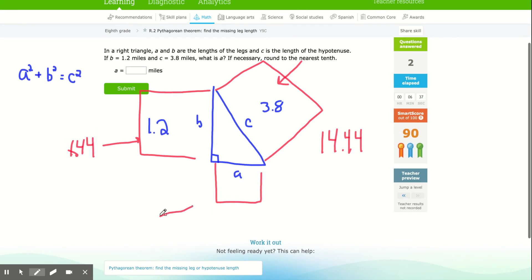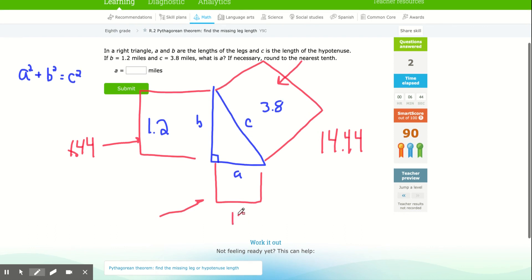Now, to find the area of this square, I'm going to minus the 1.44 from the 14.44. That's really nice. That's going to be an easy 13.